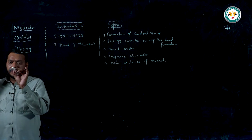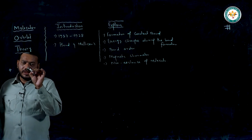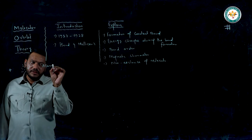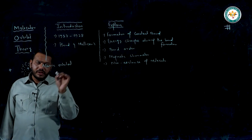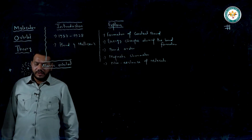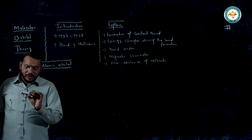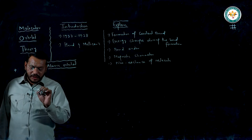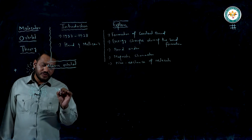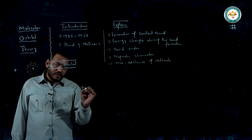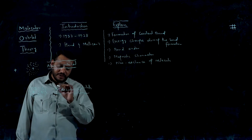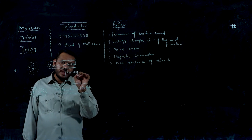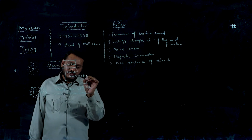Suppose that this is a nucleus. If the electron cloud is under the influence of one nucleus, then it is known as an atomic orbital. If the electron cloud is under the influence of more than one nucleus, then we say molecular orbitals. A molecular orbital is formed by the linear combination of atomic orbitals.